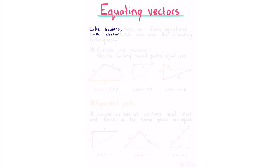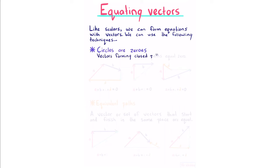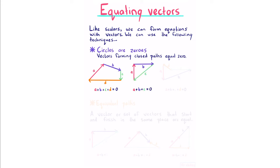Equating vectors. Like scalars, we can form equations with vectors. Circles are zeros: vectors forming closed paths equal zero. So if we have vectors a, b, c, and d forming a closed path that leads back to where we started, the sum of all those vectors is zero. No matter which order you add them or how many vectors you use, a closed path of vectors always equals zero.